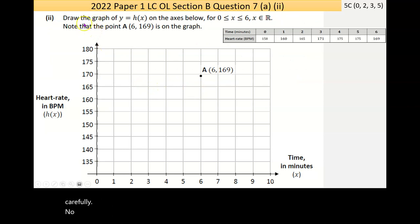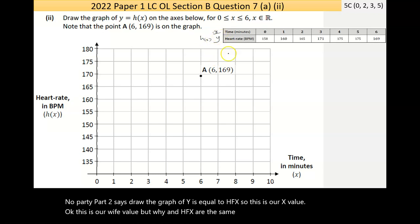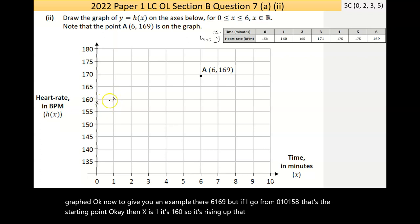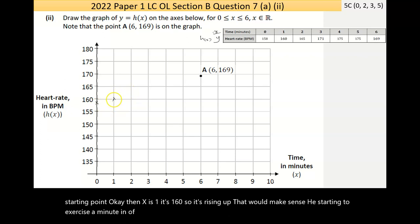Part A, part 2 says draw the graph of y equals h of x. This is our x value, this is our y value, but y and h of x are the same thing. So really all we're saying is graph it. 0, 158 is the starting point. Then when x is 1, it's 160, so it's rising up. That would make sense. He's starting to exercise, a minute in of jogging. Your heart rate is going to go up. Then it goes up to 165, then to 171, then to 175.